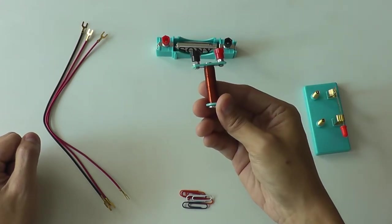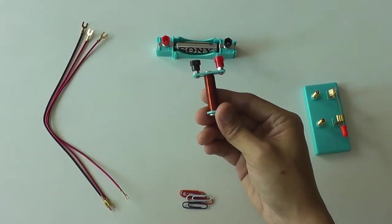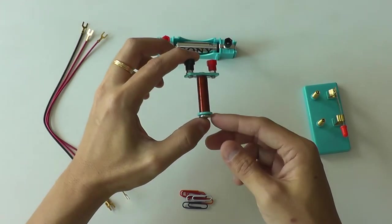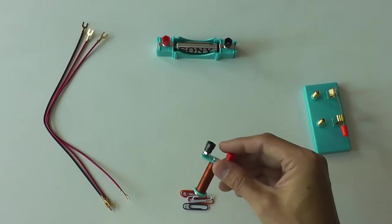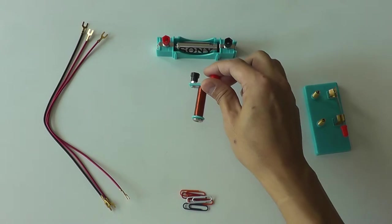And this electromagnet, basically it will become a magnet when you pass an electricity current through it. But if you do not pass an electrical current through it, it will just be a piece of normal metal. You see, it does not attract the steel paper clip. But later when we pass electricity through it, you will see the difference.